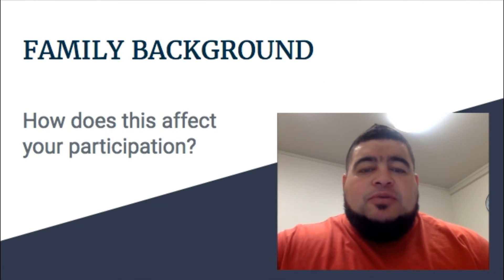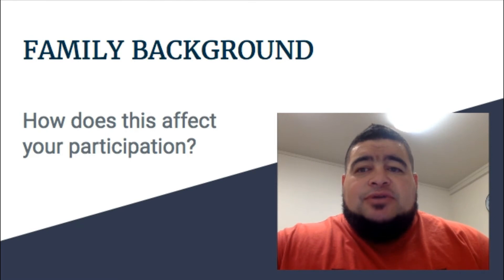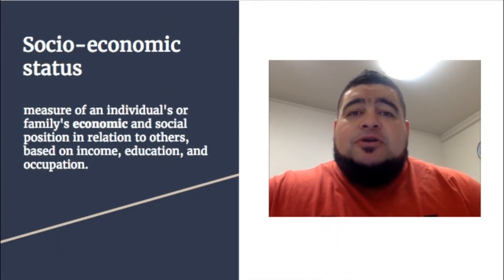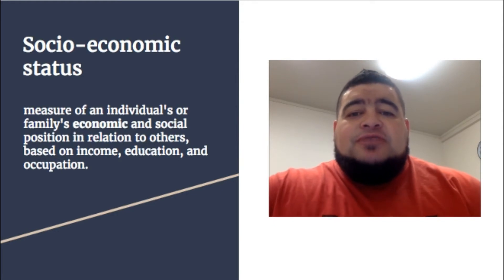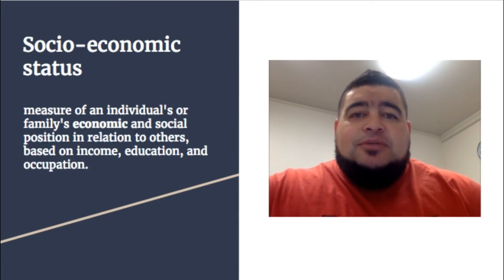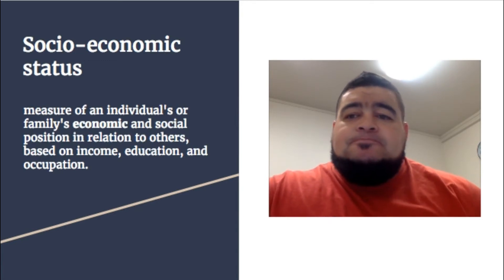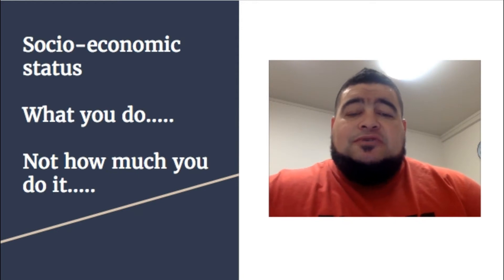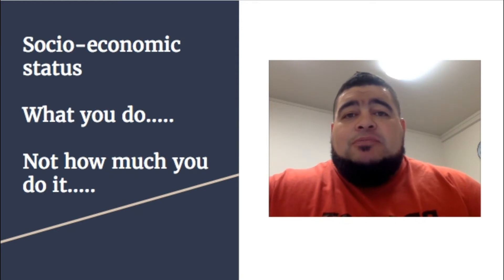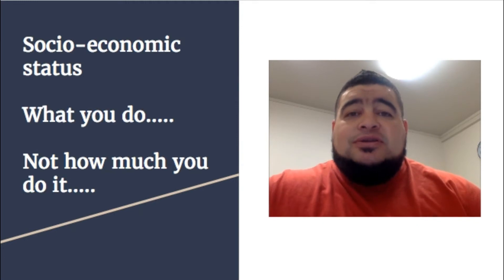This video is about how your family background affects your participation in physical activity. One element of your family's background is your socioeconomic status — a measure of an individual's or family's economic and social position based on income, education, and occupation. Your socioeconomic status affects what you do or how you participate in physical activity. For example, people with more money might do things like skiing or snowboarding because they can afford a season pass.